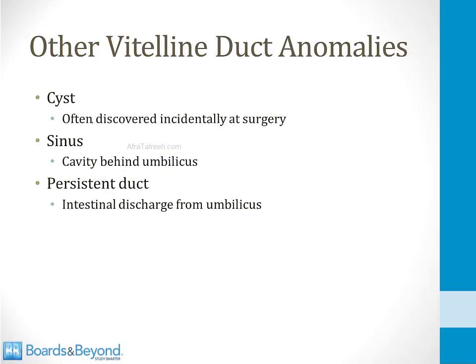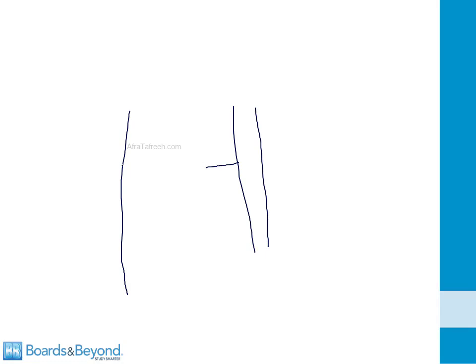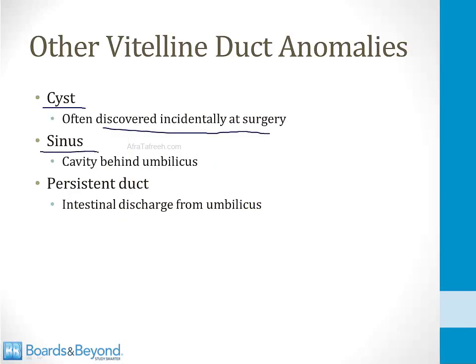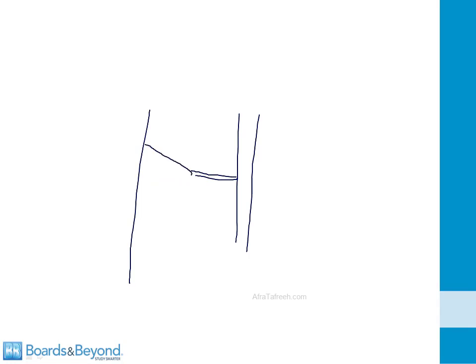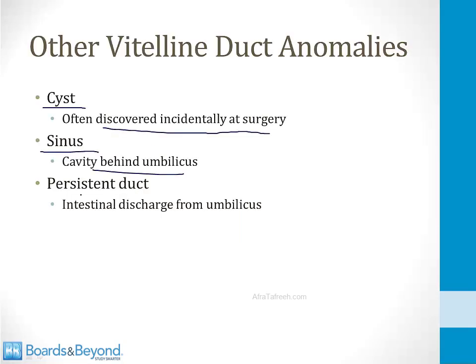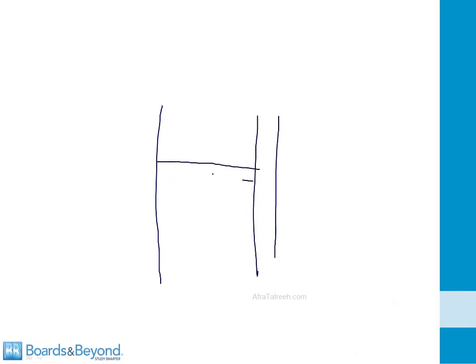Other rare vitelline duct anomalies include a vitelline cyst — often discovered incidentally during surgery — where the duct largely obliterates into fibrous tissue but leaves a small cyst. A sinus can also occur behind the umbilicus where the vitelline duct connects. Most rarely, a persistent vitelline duct can cause intestinal discharge from the umbilicus, as contents from the intestine travel through the still-connected duct to the umbilicus.